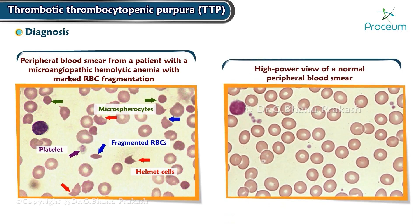For comparison, the high-power view of a normal peripheral blood smear shows several platelets and a normal lymphocyte. The red cells are of relatively uniform size and shape. The diameter of a normal red blood cell should approximate that of the nucleus of a small lymphocyte, and the central pallor should be equal to one-third of its diameter.